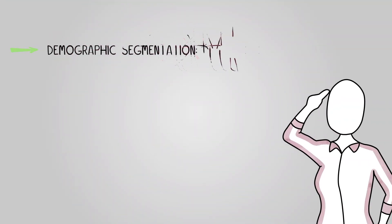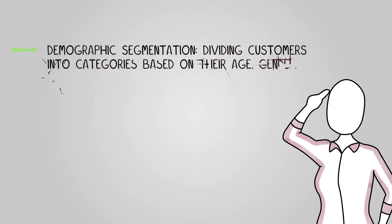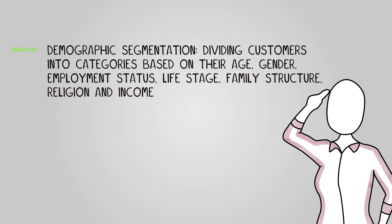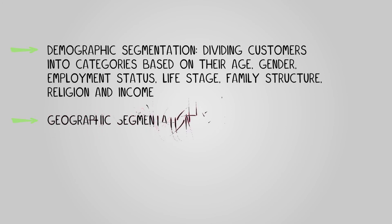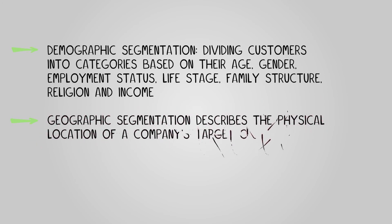In conclusion, demographic segmentation means dividing customers into categories based on factors like their age, gender, employment status, life stage, family structure, religion, and income. For example, women aged 40 to 50 with full-time employment and a yearly income of at least £40,000. Geographic segmentation describes the physical location of a company's target customers — for example, using the color red when marketing in China as it represents luck, but avoiding it in the UK where it represents danger.